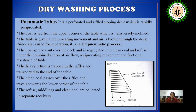The heavy refuse is trapped in the riffles and transported to the end of the table. The clean coal passes over the riffles and travels towards the lower corner of the table. The refuse, middling, and clean coal are collected in separate receivers. From this pneumatic table, three parts are basically separated: clean coal, middling, and refuse. Clean coal gives the best coal; middling contains some amount of coal but also impurity; and refuse is basically the impurity present in coal. This method is a dry washing process.